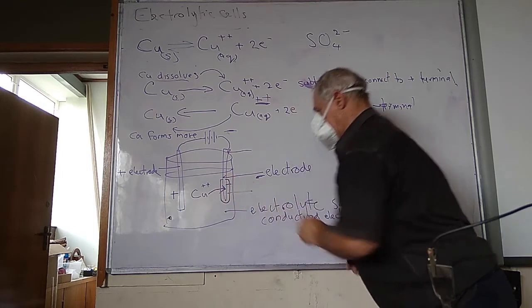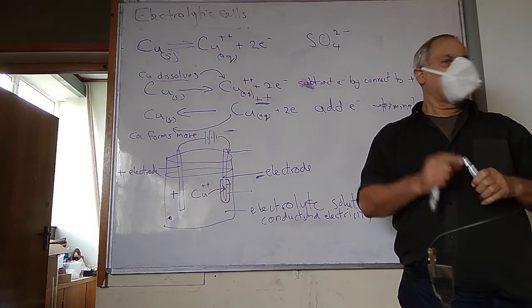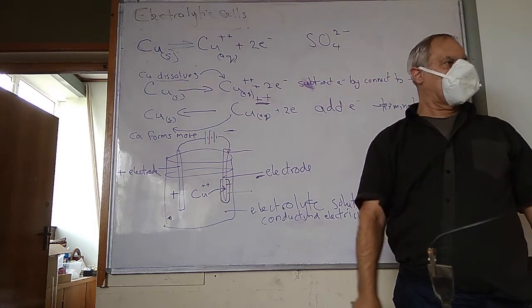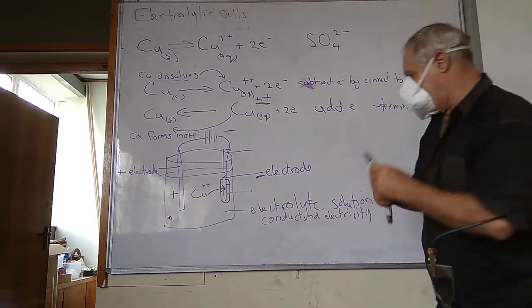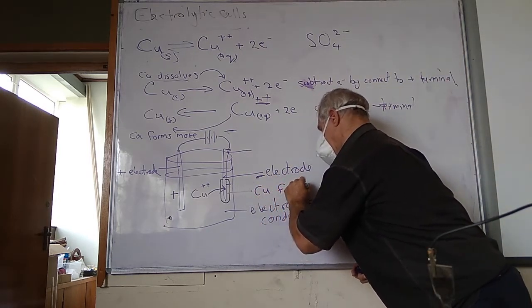What do they form here? What do we see forming here? What's this that I've drawn? A minute. You saw that black stuff on the electrode. Copper. That's copper forming. Copper.